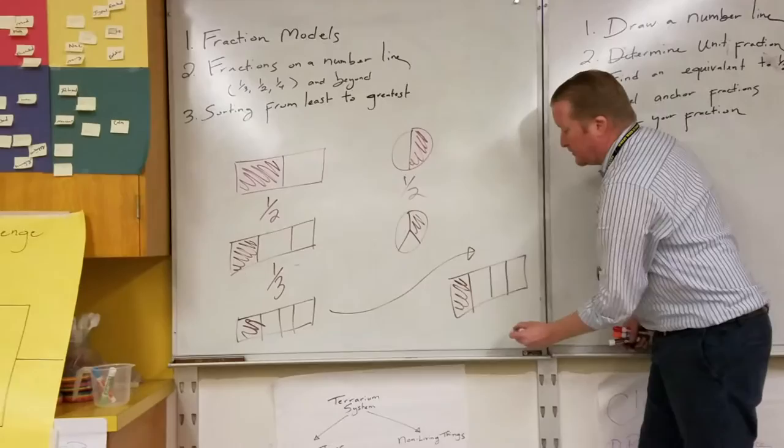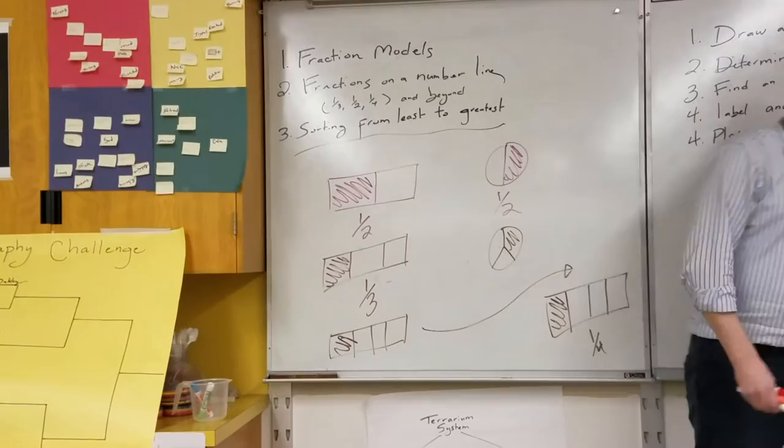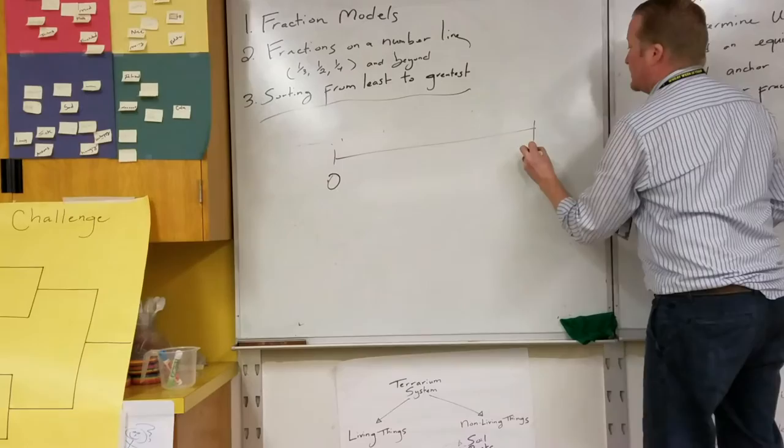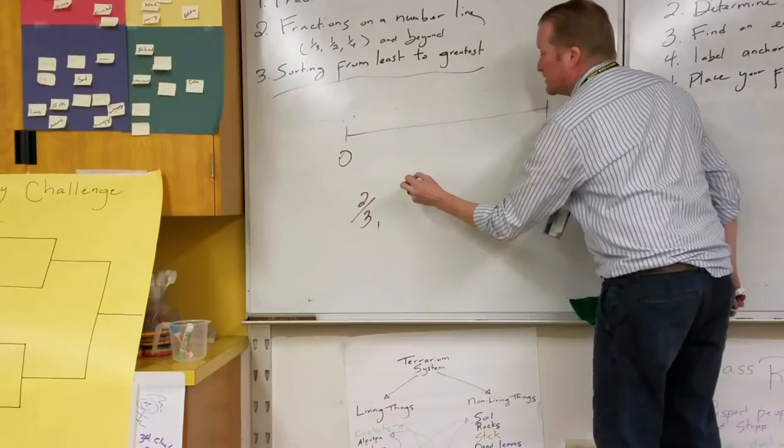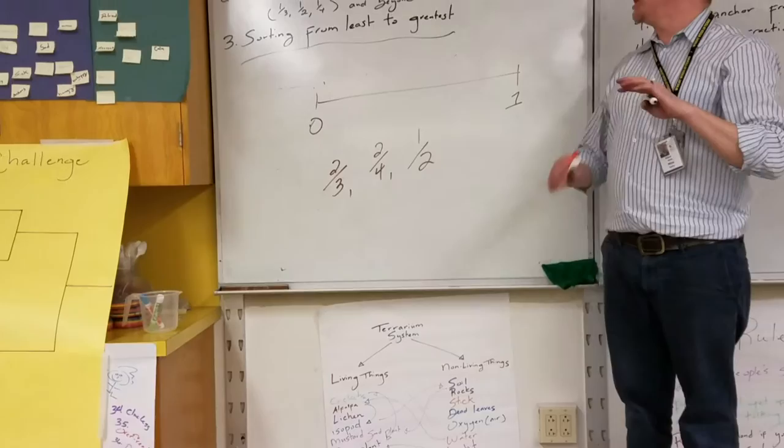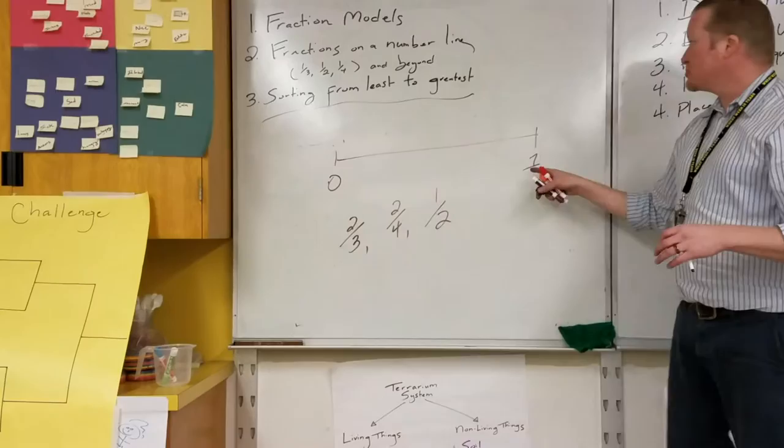One of the things that we had was sorting fractions from least to greatest, in which case we would have a fraction that started if we're doing a number line. So, here's zero, here's a number line of one, if we have students, and I say, can you please put two thirds, two fourths, one half on a number line. Halves, thirds, and fourths are very much our anchor fractions. That's what we want students to just know.